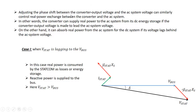By adjusting the phase shift between the converter output voltage (V_STATCOM) and the AC system voltage, we can control real power exchange between the converter and AC system. The converter can supply real power to the system from its DC energy storage if V_STATCOM leads V_bus. Conversely, if V_STATCOM lags V_bus, the converter can consume real power — to compensate for its own losses, or to charge an energy storage device.